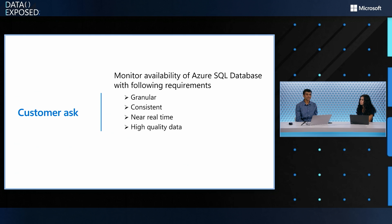And obviously, they wanted it in near real time. If something happens, if the DB is unavailable, they wanted to know it sooner than later. And most importantly, they wanted high-quality data. They wanted us to make sure that any metric data published for a resource should be emitted right from the engine, wherein we exactly know what's happening on the DB engine.